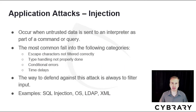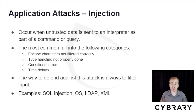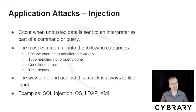The second form of application attack is injection. It occurs when untrusted data is sent to an interpreter as part of a command or query. The most common fall into these categories: using escape characters not filtered correctly, type handling not properly done, conditional errors, and timing delays. The way to defend this attack is to filter your input. Common examples include SQL injection, operating system injection, LDAP injection against the directory, and XML injection.